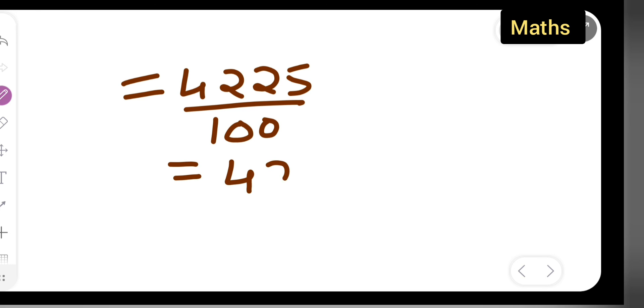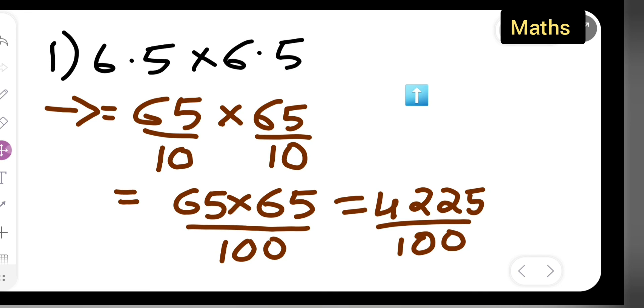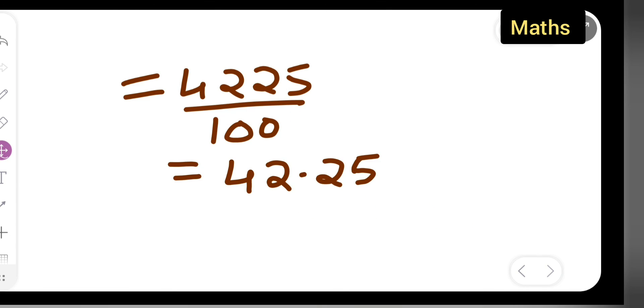your answer is 42.25 because here the decimal point is which place? Two zeros, so one, two. So decimal point will come right over here. This is your answer, 42.25. So this is the way you have to multiply. Thanks for watching. If you have any doubts or queries, you can comment below.